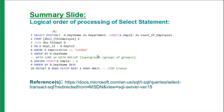We have reached the summary slide. Let's quickly recap what we learned. The logical order of processing a SELECT statement starts from the FROM clause, then ON clause, then JOIN clause, followed by WHERE clause, then GROUP BY clause. If you are using any supergroups such as WITH CUBE or WITH ROLLUP, those would be executed next. After that, the HAVING clause will be executed.